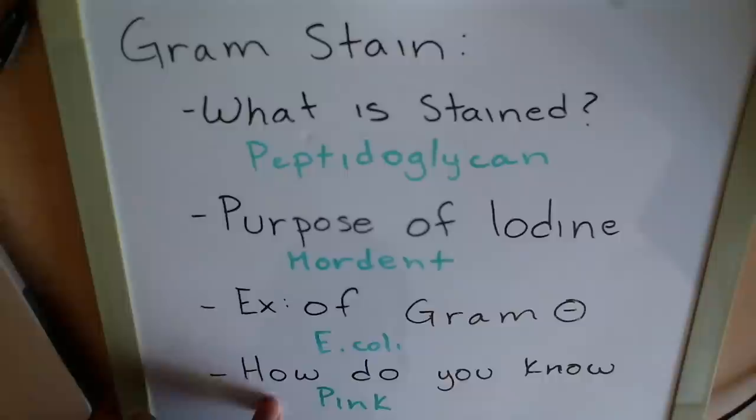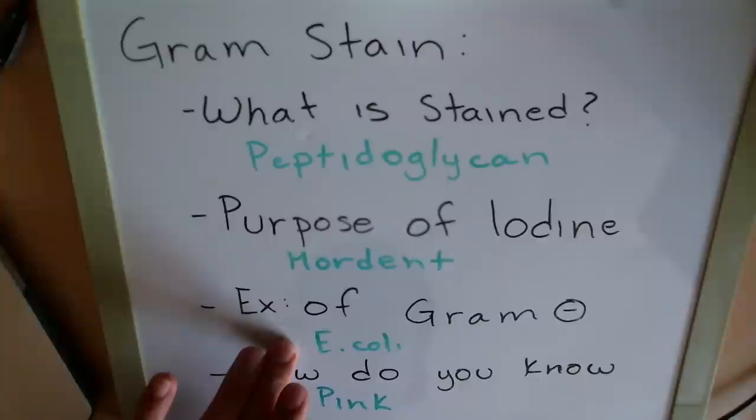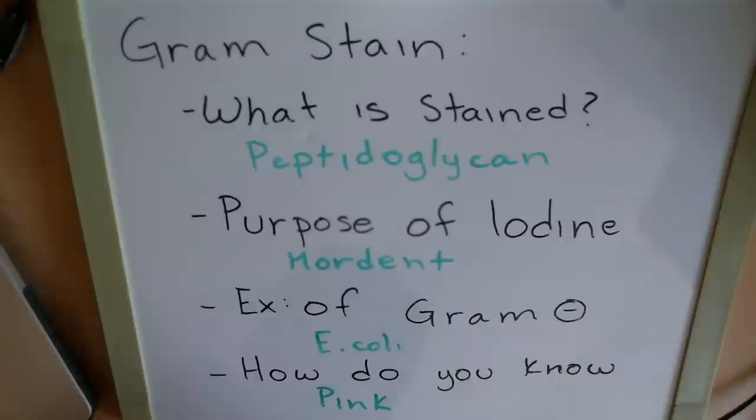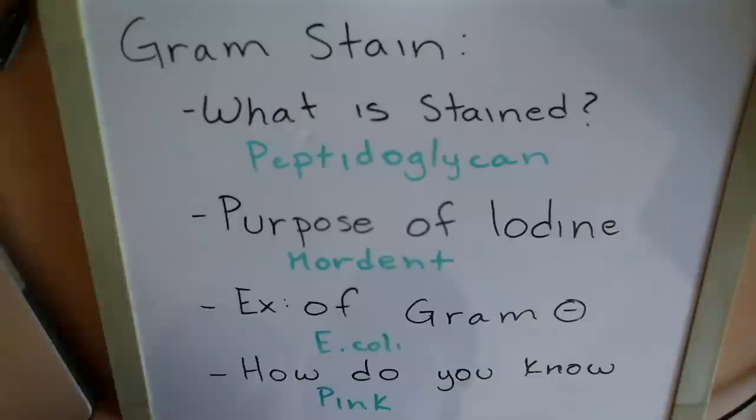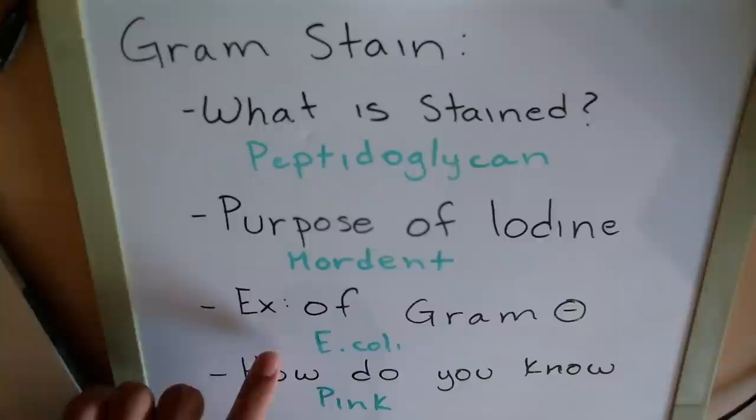Getting back to the question: if you got the bacteria example wrong, could you still get the follow-up right? The answer is yes. Even if you don't know a gram-negative bacteria, you know that gram-negative does not take up the primary stain and only takes up the counterstain. And what color is the counterstain? It's pink. So if you know the concepts, you could get 3 of the 4 questions right and just have to guess on one of them — and sometimes your guess will end up being right.